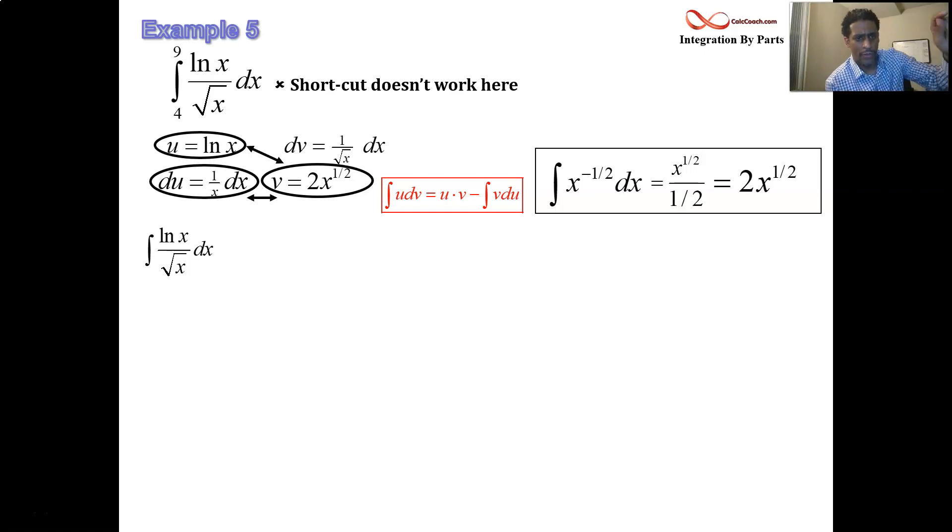I'm going to first treat this as if it's an indefinite integral just to get the full antiderivative before I then go back and plug in these original bounds and use the fundamental theorem of calculus. And so we have u times v, that's 2x to the half times natural log of x, minus the integral of v du. If you have 2x to the half and divide it by x, how does that simplify?